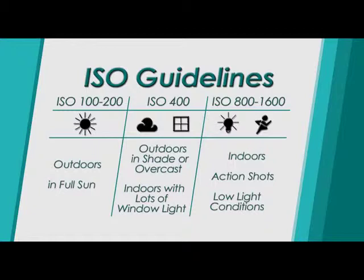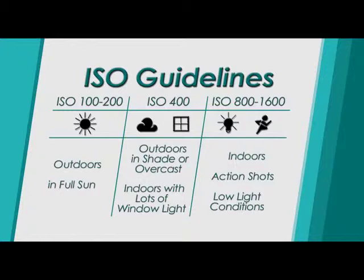So how do you know which ISO to use? Here's a guide that can help you — it's also on your photography tips card. If you're shooting pictures outdoors in full sun you'll want to set your camera to a fairly low ISO setting between 100 and 200. You'll want to use ISO 400 if you're taking pictures outdoors in the shade or on a cloudy day. ISO 400 is also good for indoor photos with plenty of window light. And if you're shooting action pictures or pictures in poor lighting conditions you'll want to use a very high ISO of about 800 to 1600.